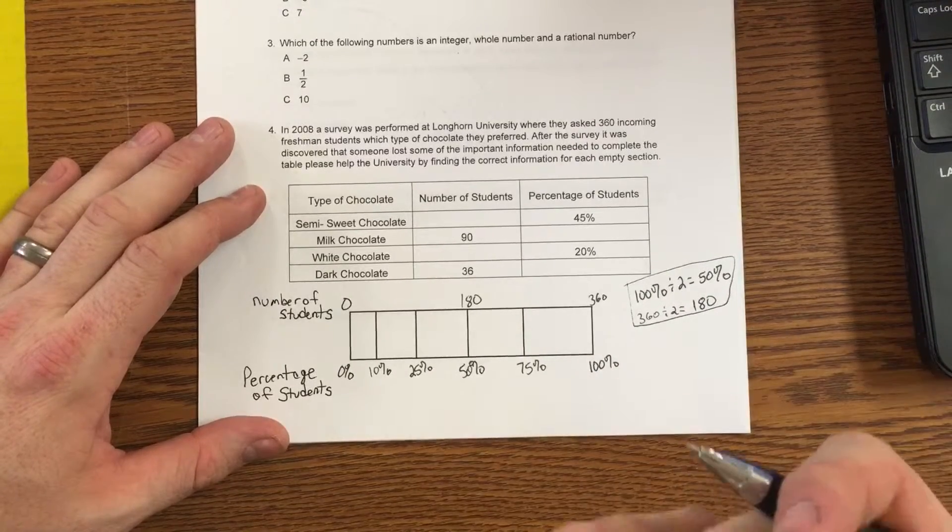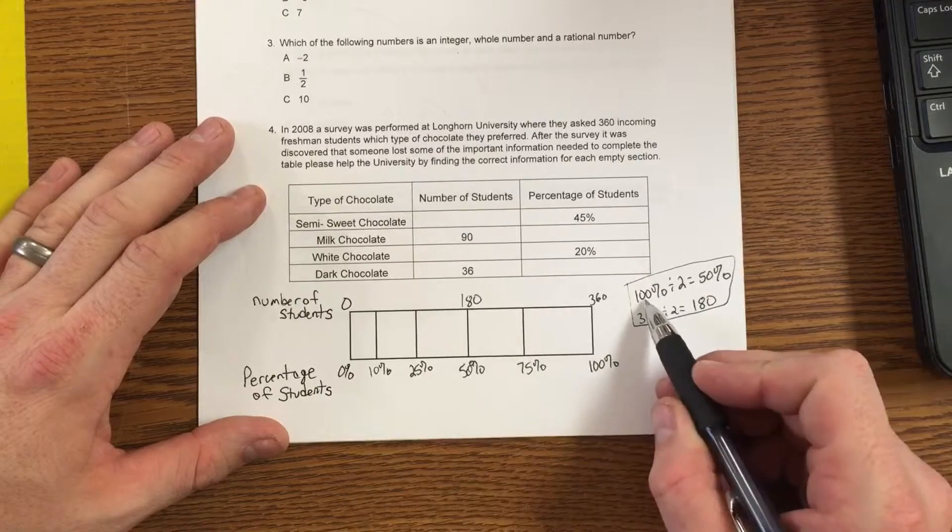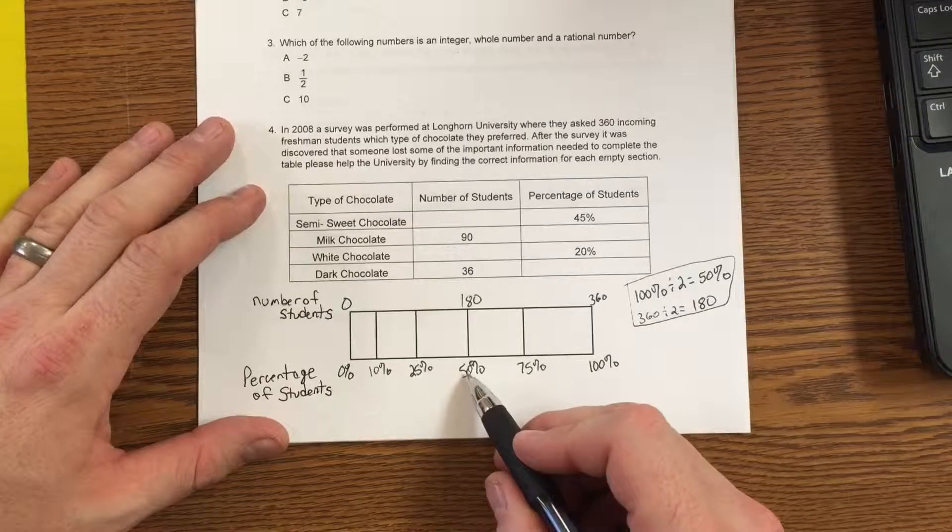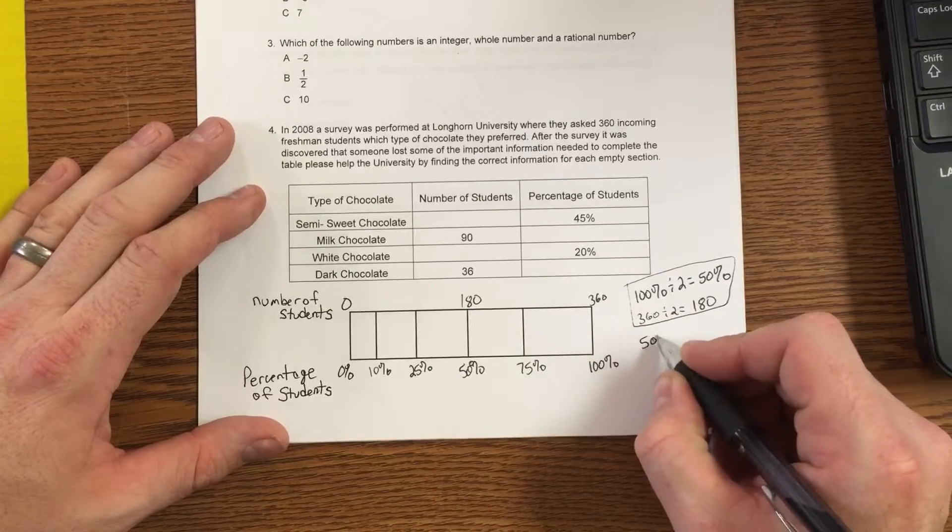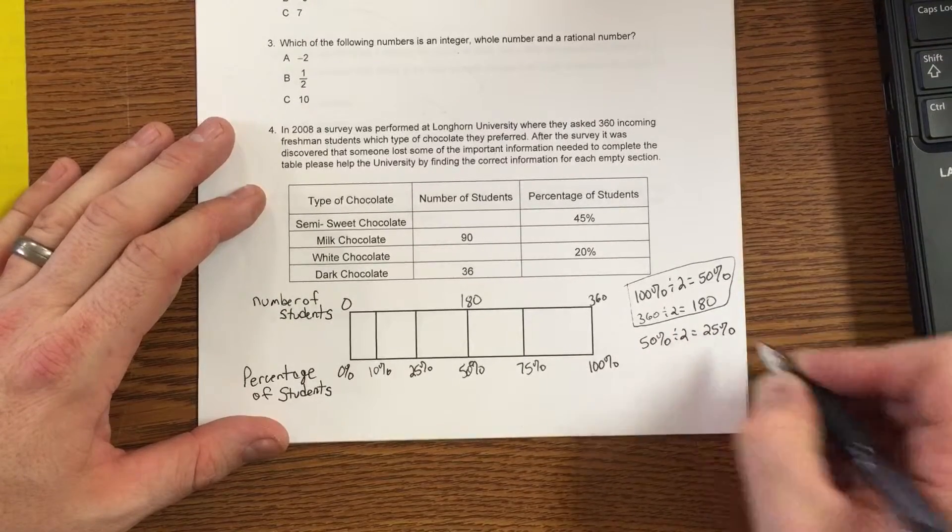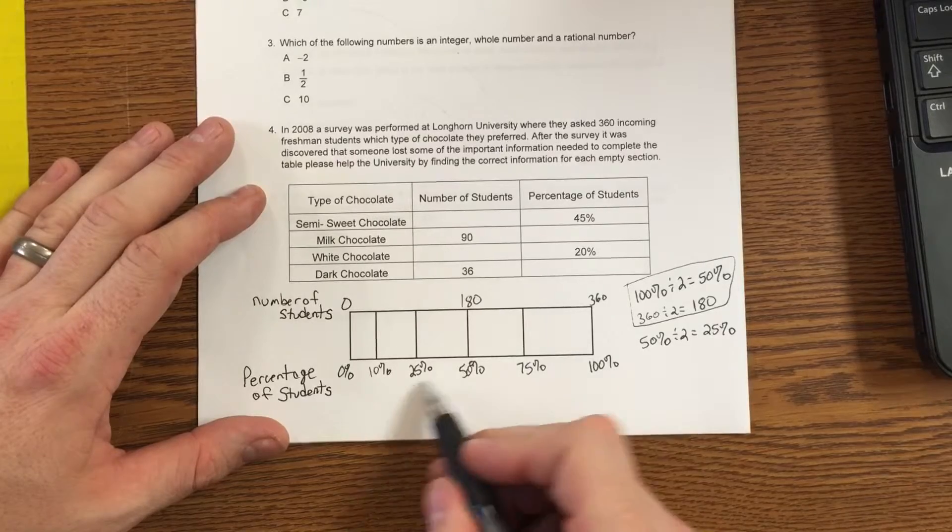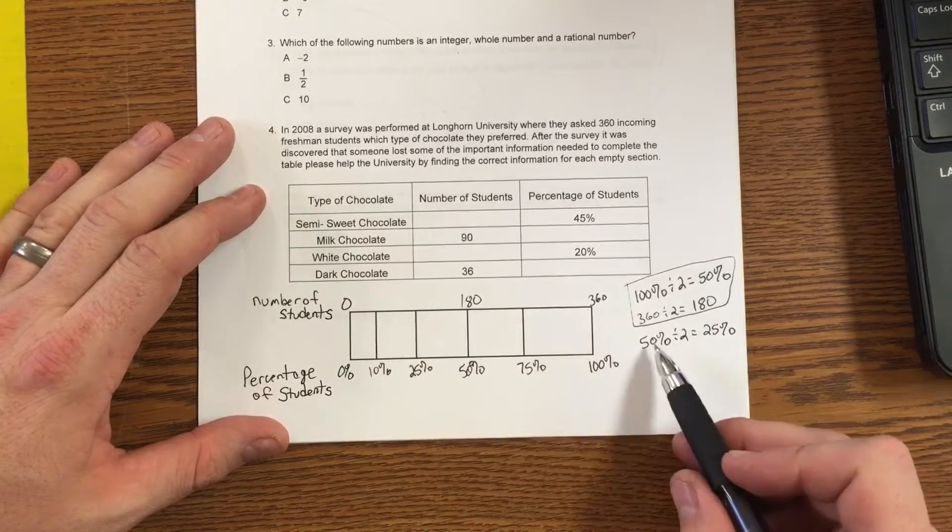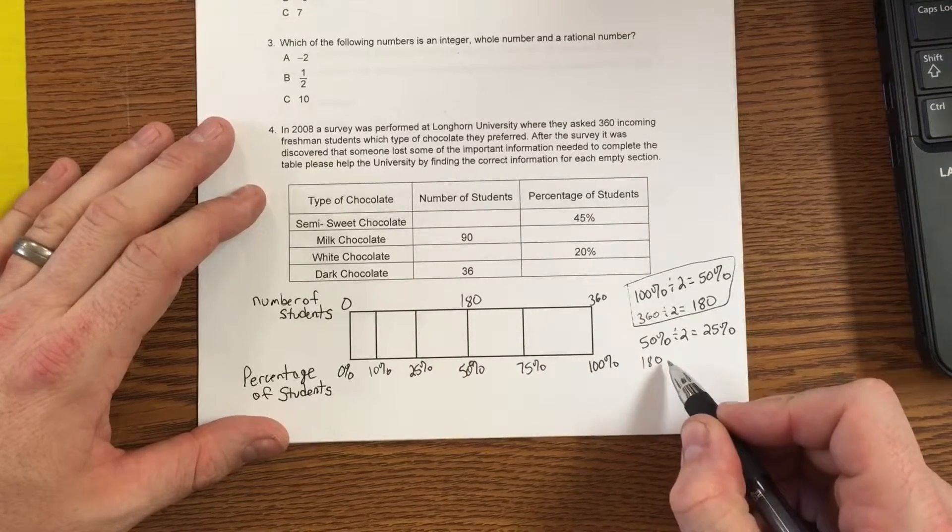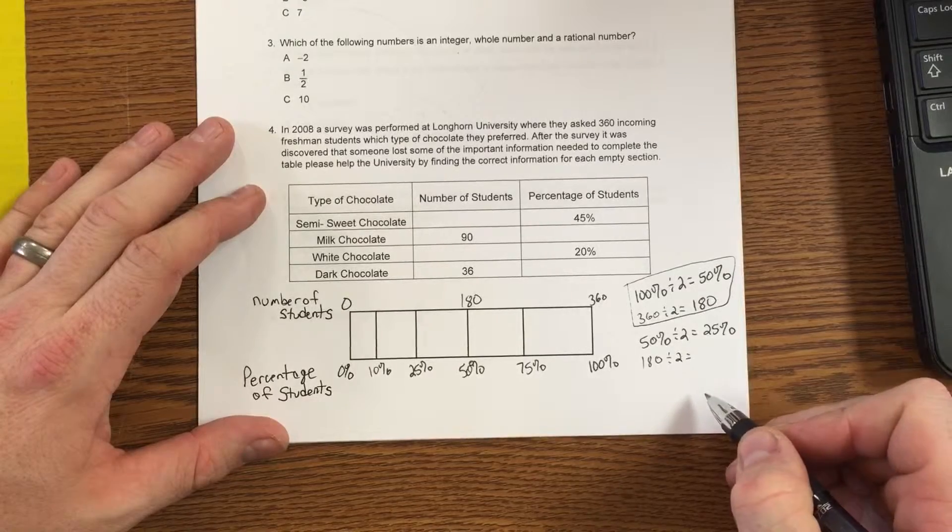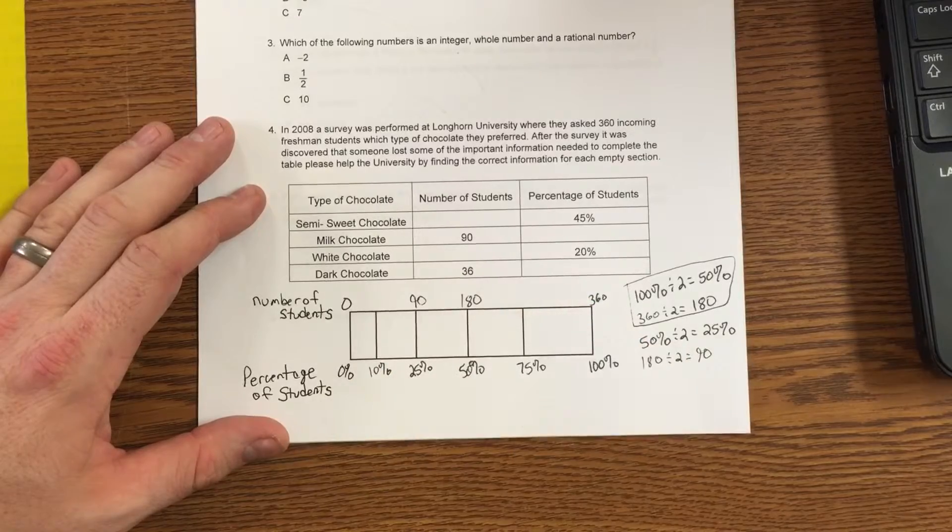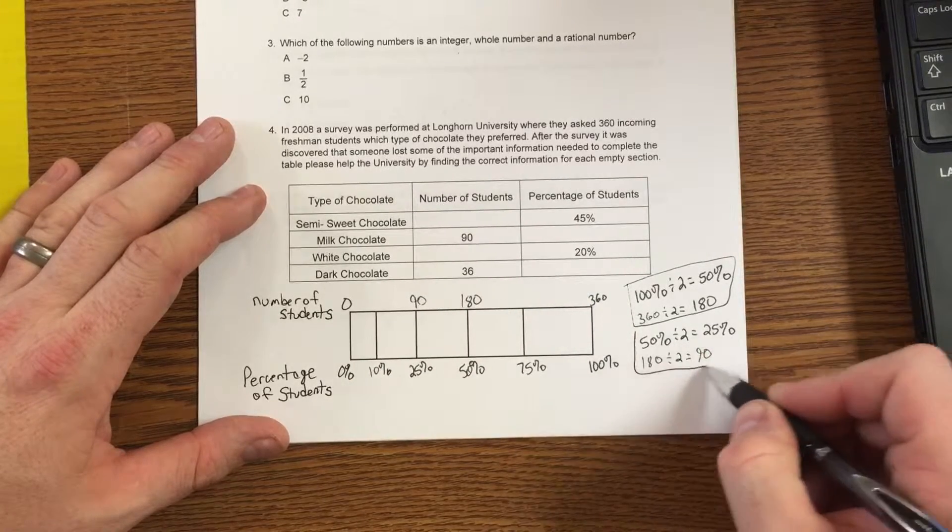I'm going to do the next thing that I like to do is find out 25%. So you're kind of using the same strategy here that I used on 100%. I'm going to just use that on 50% because I know that 50% divided by 2 is 25%. Well, if it works down here, then it's going to work up there. 50% is worth what? 180. 180 divided by 2 is 90. So put my 90 up here, and I have finished that.